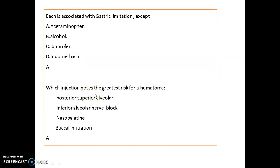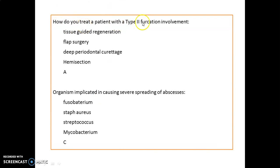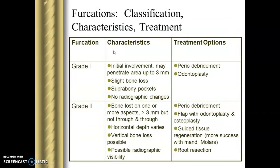The injection that poses the greatest risk for hematoma is the posterior superior alveolar nerve block. For a patient with Type 2 furcation involvement, we go for guided tissue regeneration. The organism involved in causing severe spreading of abscesses is streptococcus. Don't get confused between staphylococcus and streptococcus — the correct answer for spreading of abscess is streptococcus.